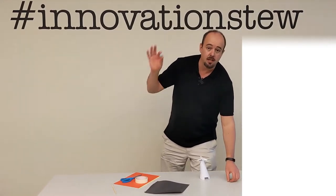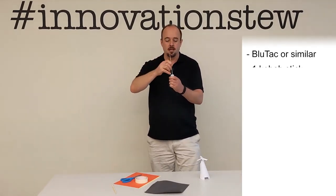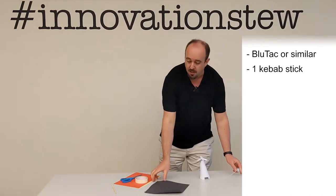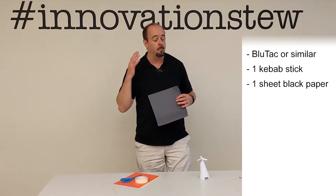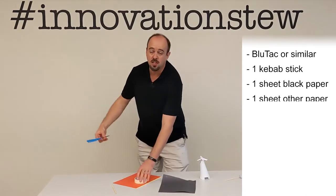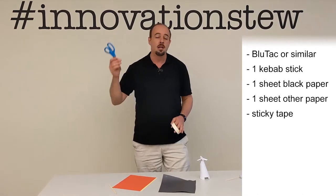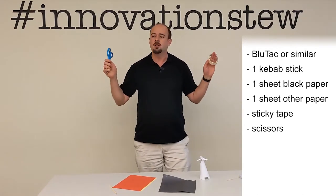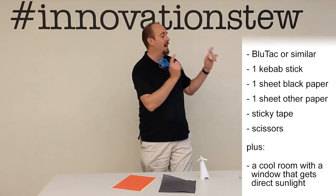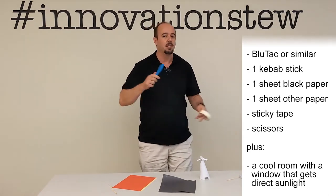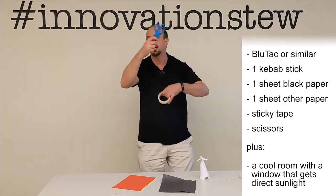For this workshop you're going to need some blue tack or play-doh, something you can stick to a table and also stick in a kebab stick. You're going to need some black paper. If you don't have any black paper you can get some white paper and paint it black. You're going to need another sheet of paper, doesn't matter what color. You're going to need some tape, pair of scissors, and you're going to need a room that offers both warm and cold. You want a nice cool room that happens to have a window with direct Sun, because convection fundamentally works by having cold and hot air rotating around the place.